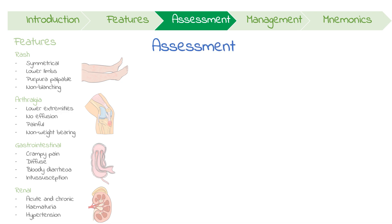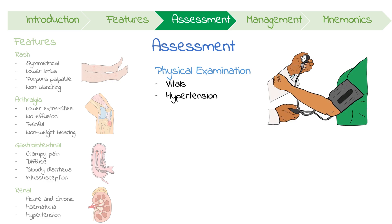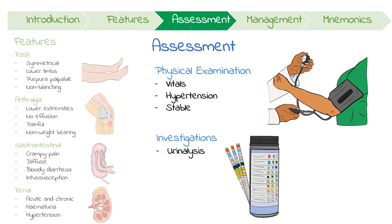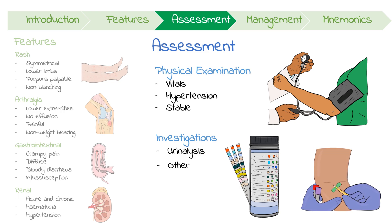To assess HSP, a thorough history should be followed by a complete physical exam. This should include vitals, specifically checking for hypertension and hemodynamic stability. In terms of investigations, a urinalysis is usually the only thing you need in a classic presentation. However, you can consider others to rule out important differentials such as ITP, leukemia, and meningococcal disease.